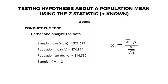We already have the values from the case: the sample mean, the population mean, the population standard deviation, and the sample size. Since we are applying the Z-score approach to testing the hypothesis, we will compute the Z-score and compare the result to the Z-score stated in our decision rule. The Z-score formula is sample mean minus population mean, all over population standard deviation divided by the square root of n.